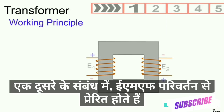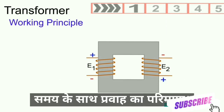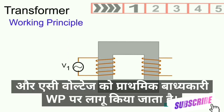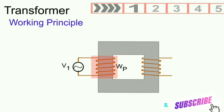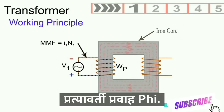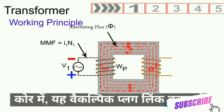The EMFs are induced by the change in magnitude of the flux with time. An AC voltage is applied to the primary winding. As this winding links with an iron core, its MMF produces an alternating flux phi in the core.